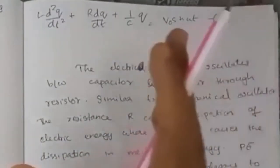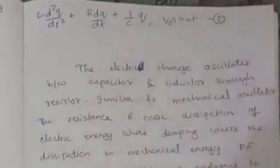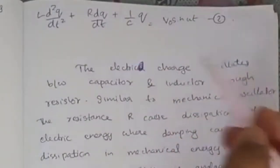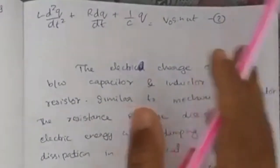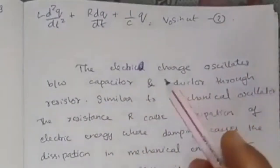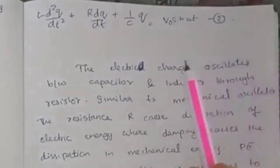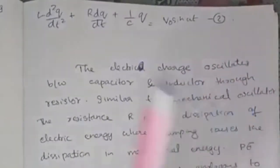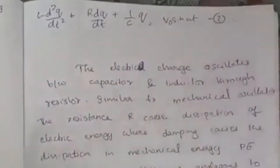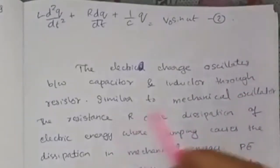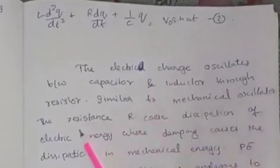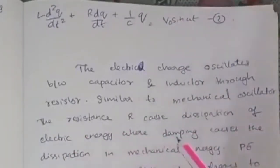The LCR circuit equation is similar to the force equation of a driven harmonic oscillator. Electric charge oscillates between the capacitor and the inductor through the resistor. This is similar to a mechanical oscillator.